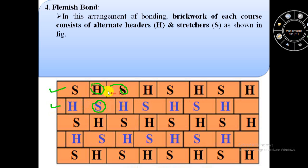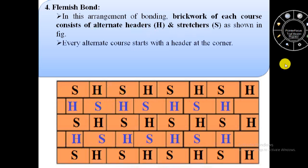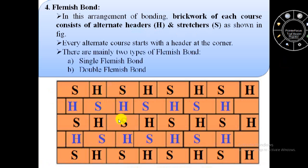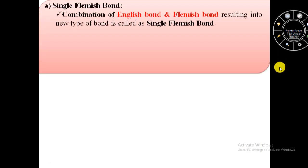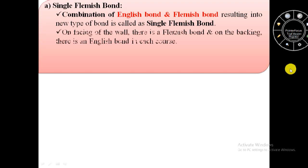In Flemish bond each course consists of alternate headers and stretchers, and every alternate course starts with a header at the corner. There are mainly two types of Flemish bond: the first one is single Flemish bond and the second one is double Flemish bond. A combination of English bond and Flemish bond results in a new type of bond called single Flemish bond.